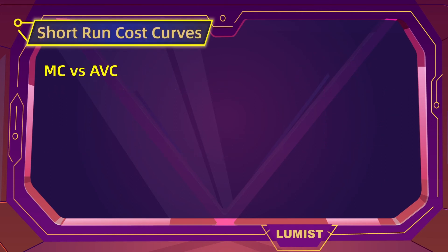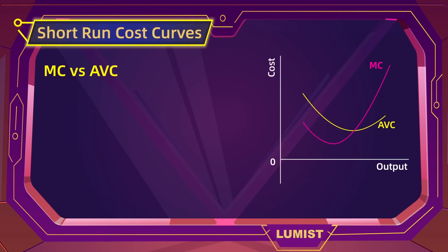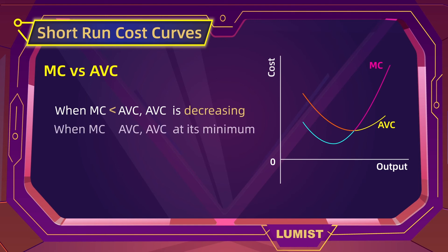Now that we have marginal cost and average cost, let's look at the cost curves more closely. Average variable cost is decreasing as long as marginal cost is below the average variable cost. When marginal cost intersects AVC, that's going to be the average variable cost minimum point. After that, marginal cost will rise above average variable cost, and then the average variable cost curve starts to increase as well.